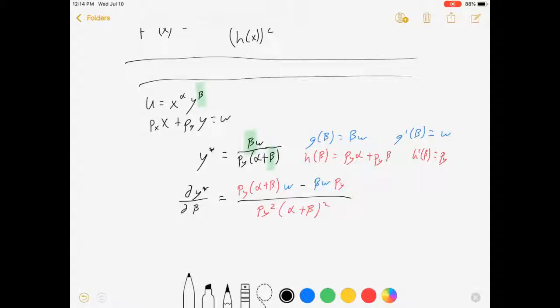Now, I'm going to skip a little bit of algebra. This thing is going to simplify out to alpha w over py times alpha plus beta squared. And so there you have it. That's how you could find the derivative of y with respect to beta, even when beta is on top and bottom in different ways.